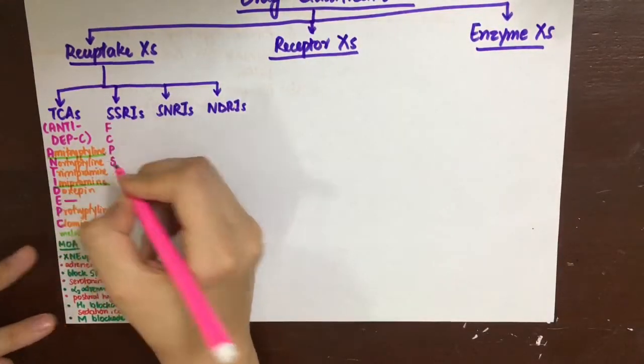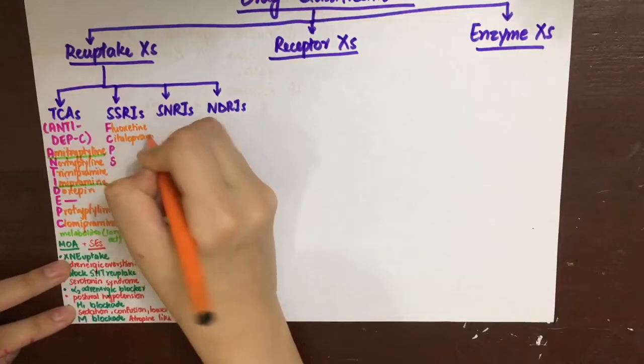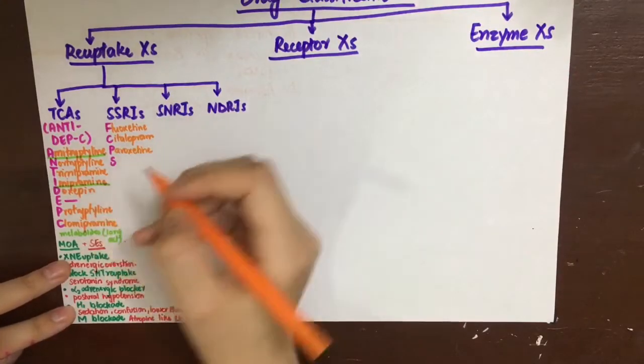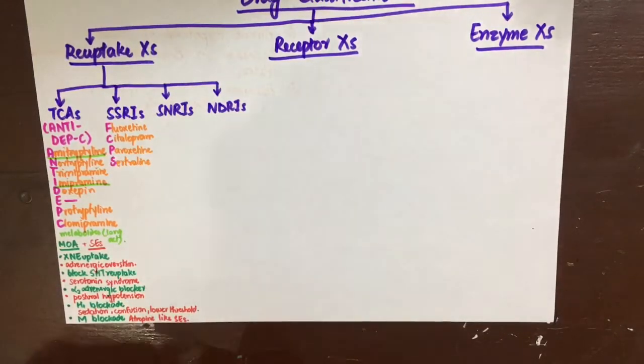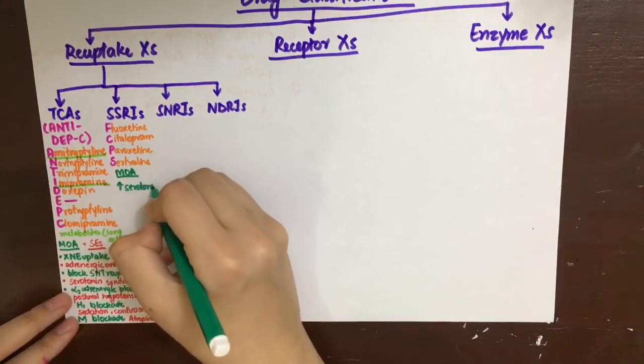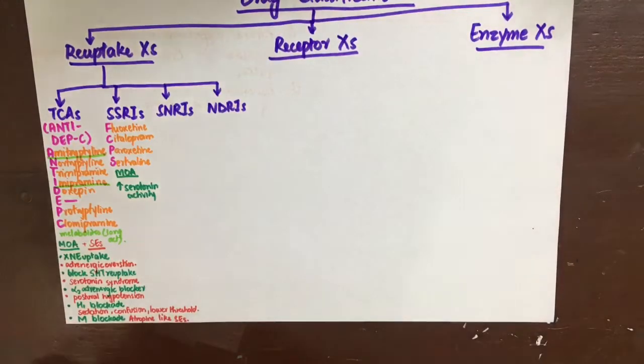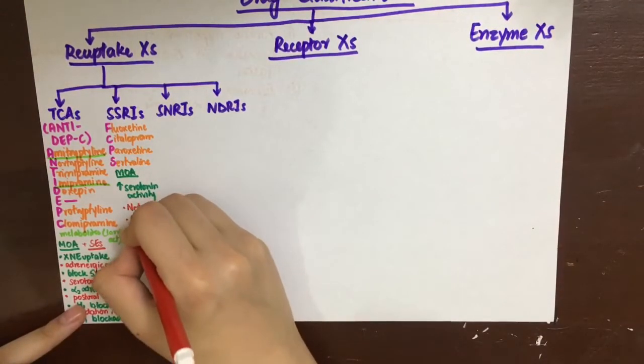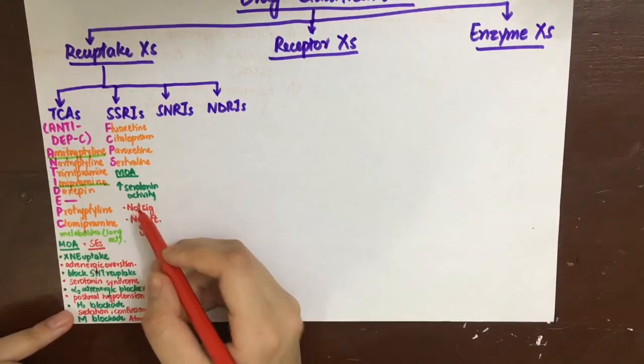Coming to the selective serotonin reuptake inhibitors, they can be remembered by the mnemonic FCPS. F stands for fluoxetine, C for citalopram, P for paroxetine, and S for sertraline. Their mechanism of action is evident by their name, that is, they will selectively block the reuptake of serotonin. Unlike TCAs, they have no muscarinic blockade, no H1 blockade, and no alpha blockade. So all those side effects are not there. They do not cause weight gain and they do not precipitate convulsions.